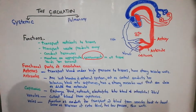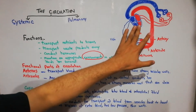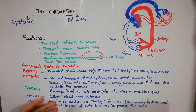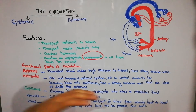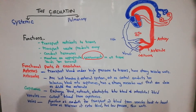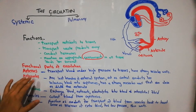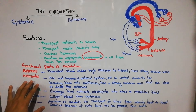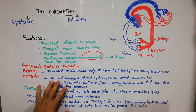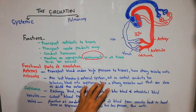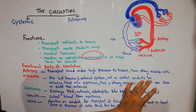The function of the arteries is to transport the blood under high pressure. Because the heart is pumping, the pressure in the initial part of the aorta and arteries is very high, so their walls are very strong, made to transport blood at high pressure. The arteries then feed the arterioles, which are the last branches of the arterial system. They act as control conduits for releasing blood into capillaries.